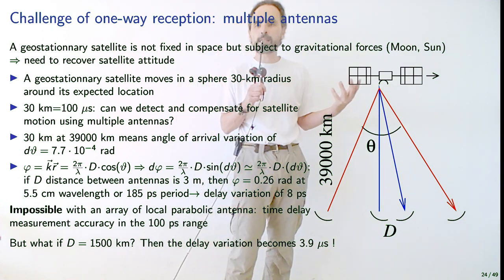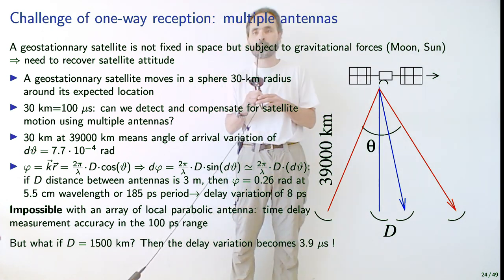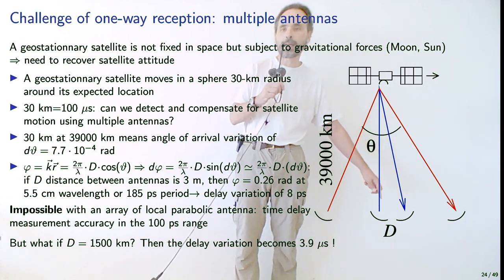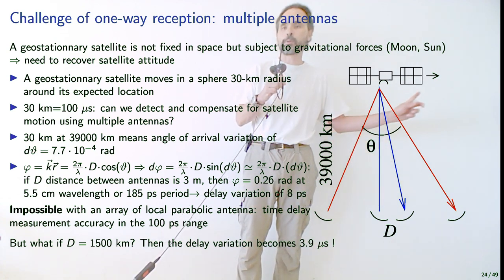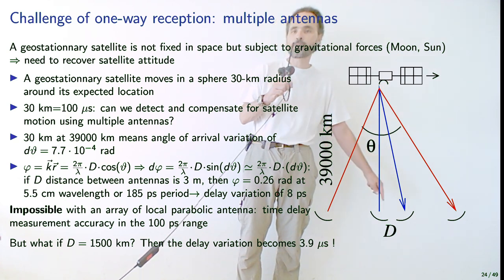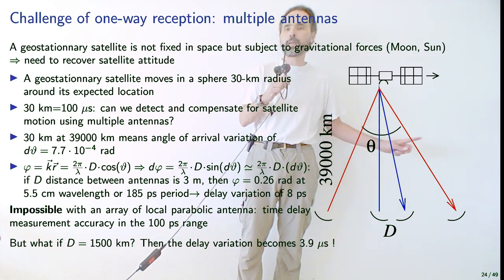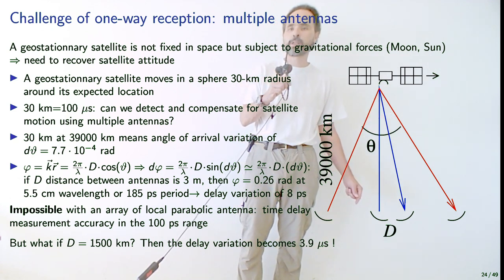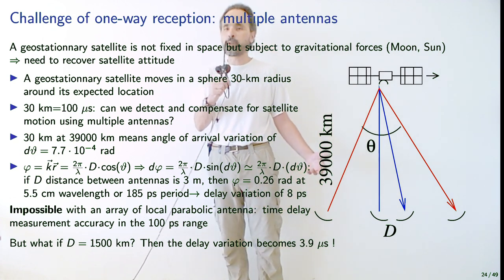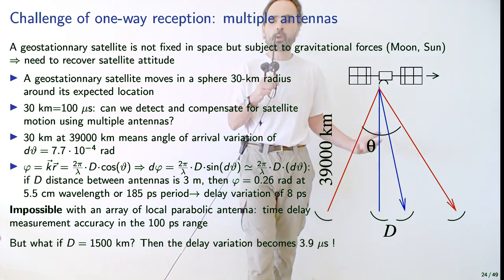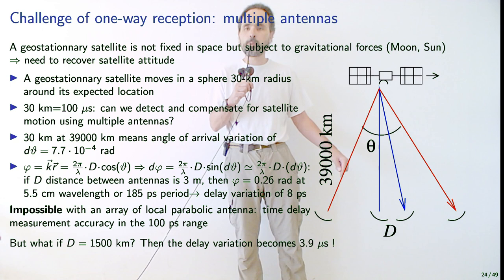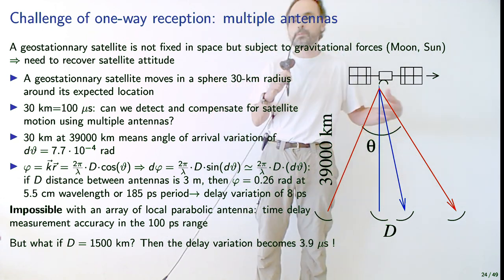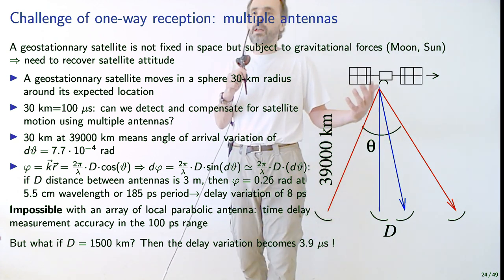Can we detect and compensate for the satellite's motion? One idea is to use two dishes and look at the time-of-flight difference due to satellite motion. With two dishes separated by 3 meters, when the satellite moves 30 km at 39,000 km distance, the time-of-flight difference is only a few picoseconds — beyond what we can detect. To increase this time difference we need to increase the baseline, as is done classically in radio astronomy, but this is impractical locally.